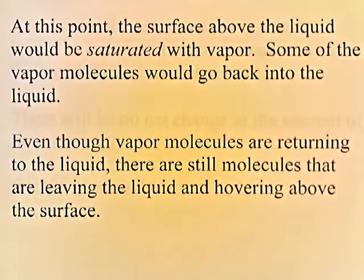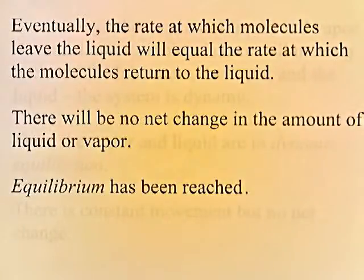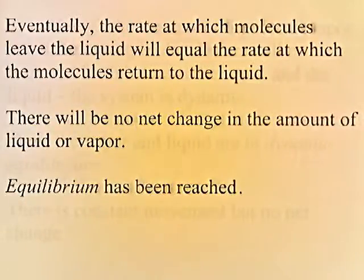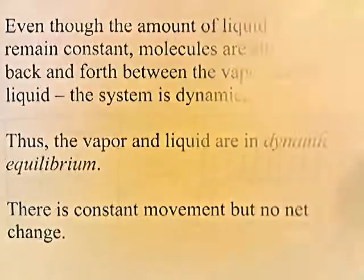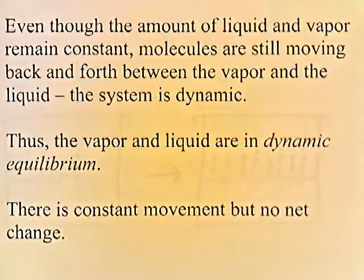Even though vapor molecules are returning to the liquid, there are still molecules leaving the liquid and hovering above the surface. Eventually, the rate at which molecules leave the liquid equals the rate at which they return. There will be no net change in the amount of liquid or vapor — equilibrium has been reached. Even though the amount of liquid and vapor remains constant, the molecules are still moving back and forth; the system is dynamic, so the vapor and liquid are in dynamic equilibrium: constant movement, but no net change.